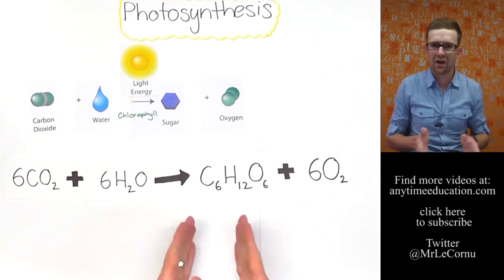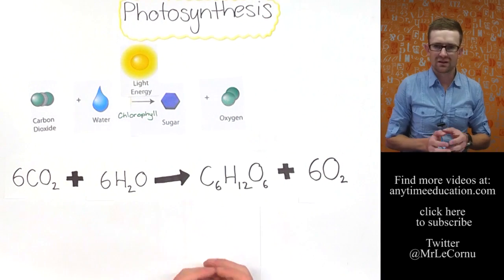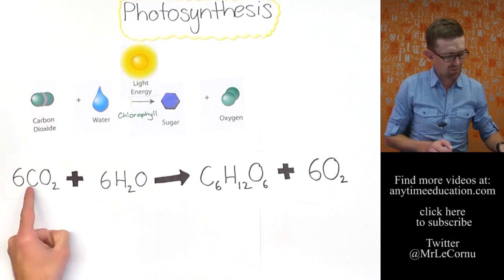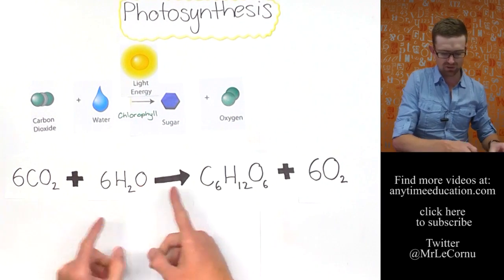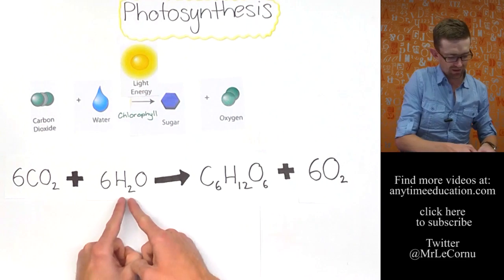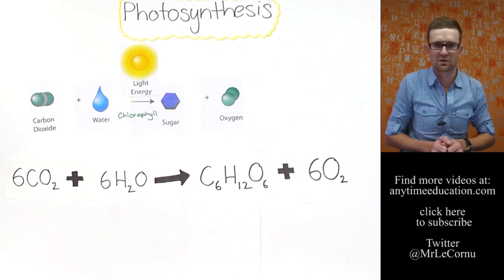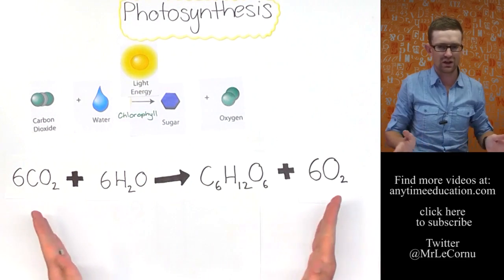I haven't gone through how that was balanced but it's balanced because we've got the same number of carbon atoms on the left as we do on the right. Same number of oxygen atoms on the left as we do on the right. And the same number of hydrogen atoms as we do on the right. It's a balanced chemical equation.